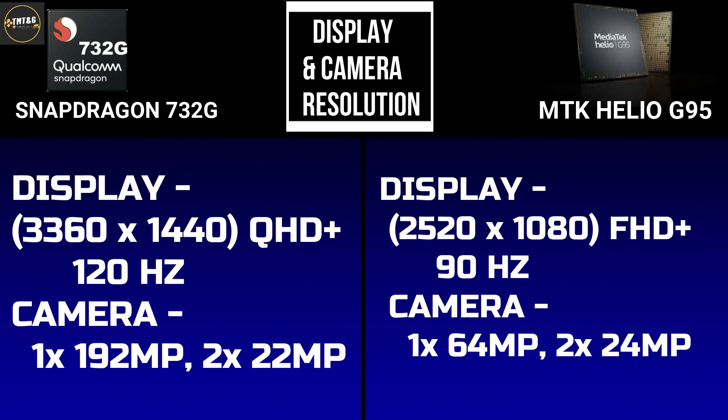The next category is display and camera resolution. The Snapdragon 732G supports a display resolution up to 3360 x 1440 pixels with Quad HD support. The Helio G95 also supports comparable display resolution.